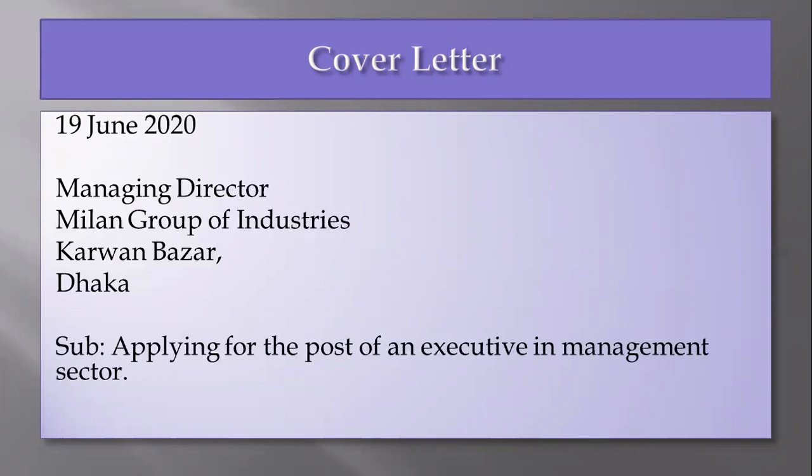Okay, dear Kidders, now you'll have to write down your application to the Managing Director. After writing the date, give a space, then write Managing Director, the name of the company or institution — like Milan Group of Industries — then the address, like Karwan Bazar, Dhaka. Next, give a space and write down your subject, that is, applying for the post of an executive in the management sector. Dear all, this subject can be anything — applying for any post. You will just use this format.